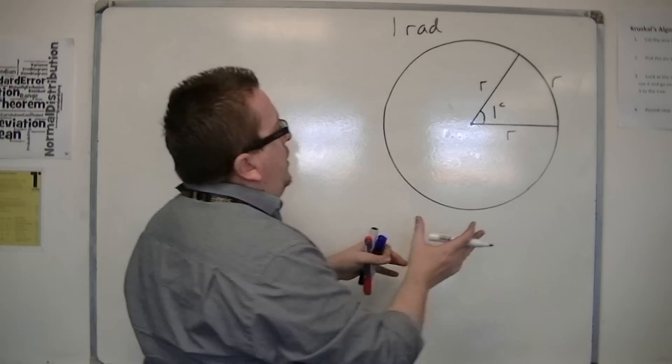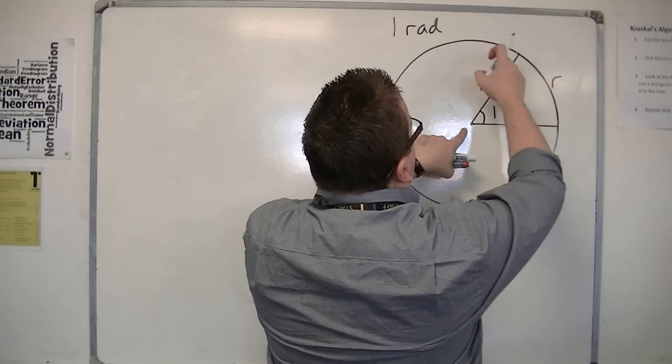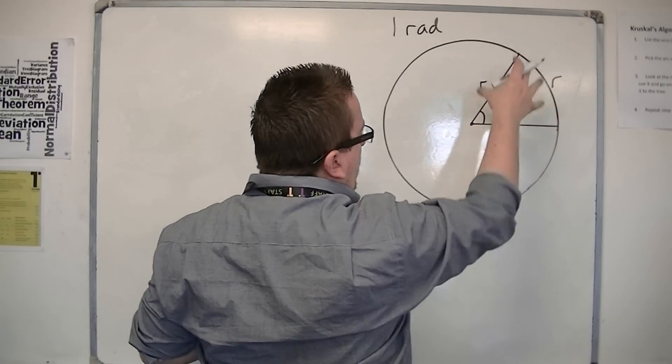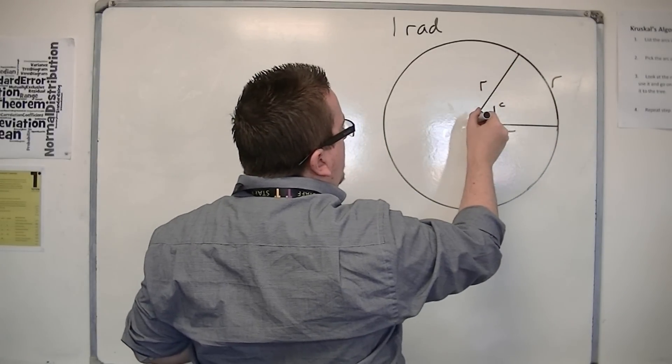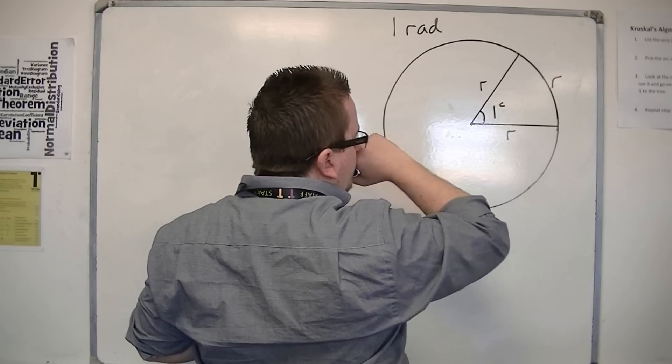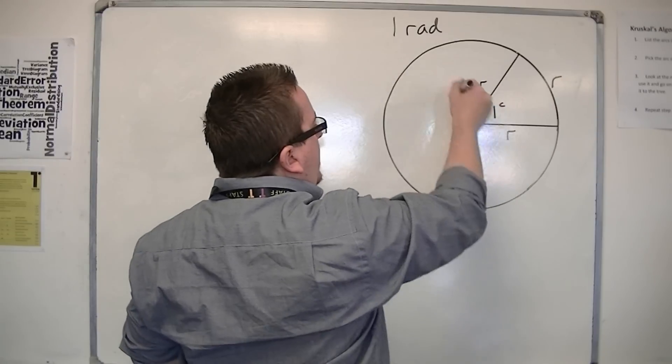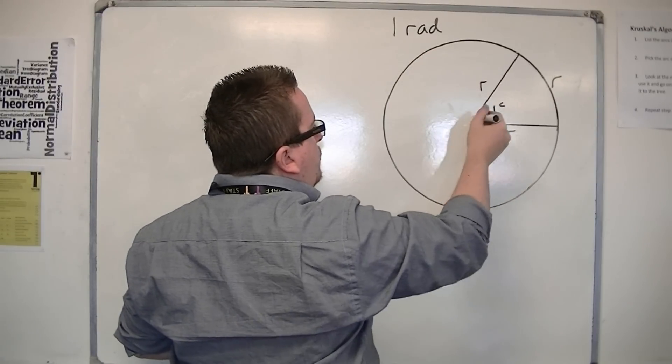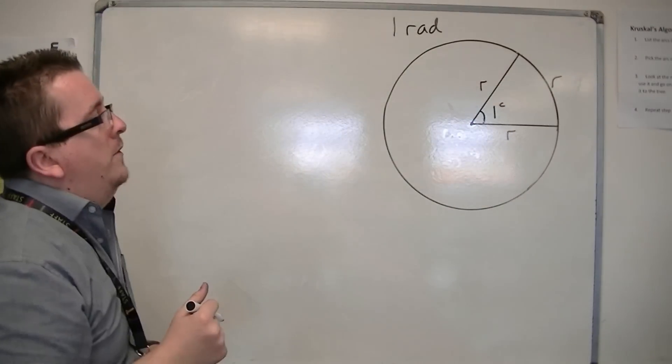Now, if you continue this all the way around, if that's 1 radian, then this is 2 radians, and then that's 3 radians, and so on. And then 4, and then 5...